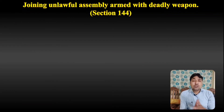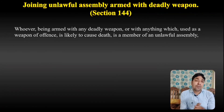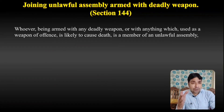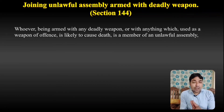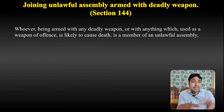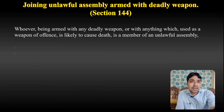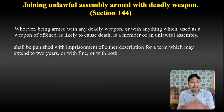Section 144 deals with joining an unlawful assembly armed with a deadly weapon. Whoever, being armed with any deadly weapon or with anything which, if used as a weapon of offense, is likely to cause death, is a member of an unlawful assembly — such member shall be punished with imprisonment of either description for a term which may extend to 2 years, or with fine, or with both.